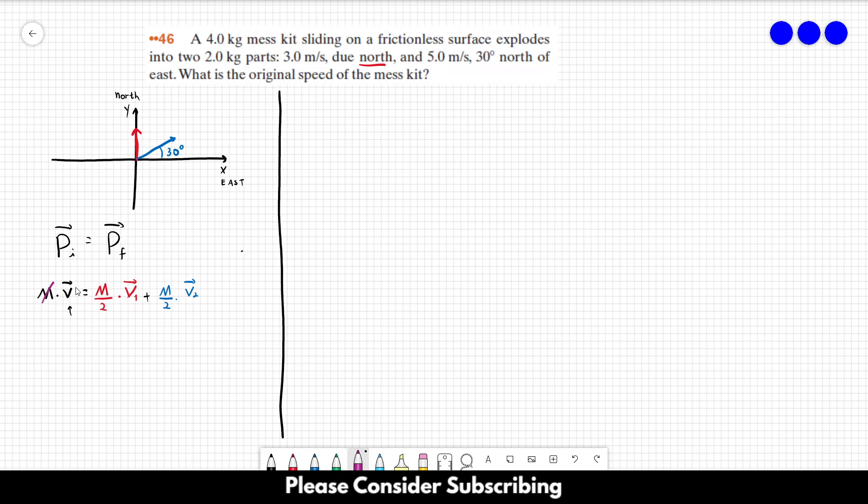As you can see, we can cross out the masses. So we already have that the initial velocity is equal to v1 over 2 plus v2 over 2.